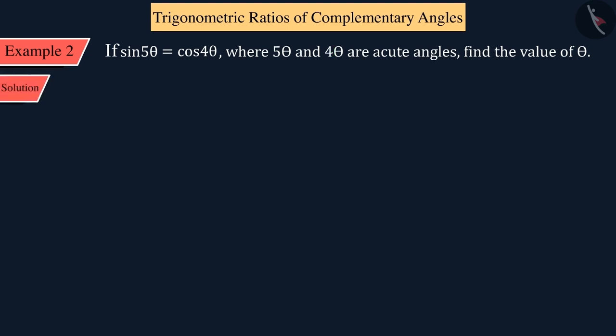Let's solve it. From the question, we can see that sin is on the left side and cos is on the right side. So to solve this, here we will change the cos on the right side to sin. From this equation, we can see that the value of sin5θ is equal to sin(90° - 4θ).